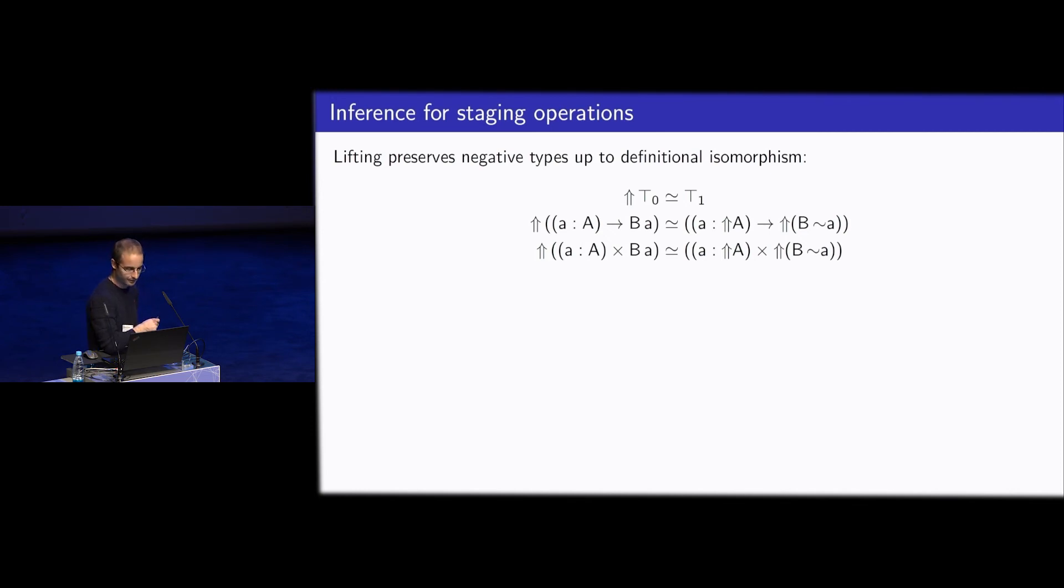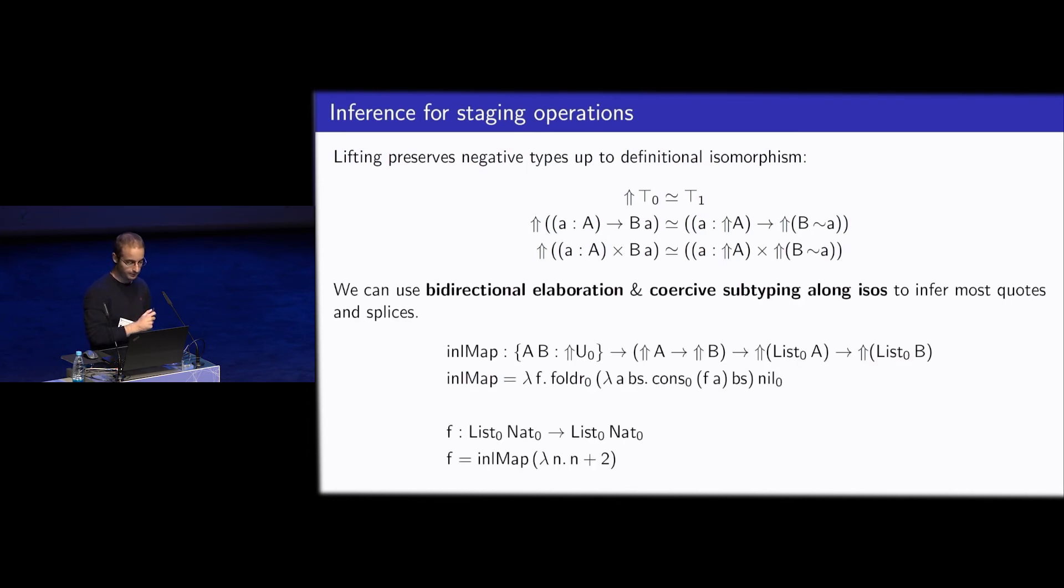And actually, this is roughly the level of noisiness that you have to content yourself with if you are using, for example, template Haskell. So template Haskell is also quite noisy. But in this system, we can do quite strong inference for quotes and splices. So before looking at this inference, it is worth to note that we have these preservations of types by lifting. So lifting preserves all negative types up to definitional isomorphism. Lifting of a function is a function of lifted types, is isomorphic definitionally to the function of lifted types and the lifting of a sigma. So here, this is a notation for a dependent pair type is isomorphic to a dependent pair of lifted things. And we can use these properties, and we can also use a bidirectional elaboration, and also the fact that we have stages in universes. So we do not have this in template Haskell, that we have already had a separation of different stages in universes. In Haskell, this would look like we have different kinds of runtime and compile time types. But because here we have the stratification, we can use bidirectional elaboration and coercive subtyping to infer pretty much all quotes and splices that we would have to write in programs. So the previous mapping definition can become just like this, and this is also implemented in the artifact demo.